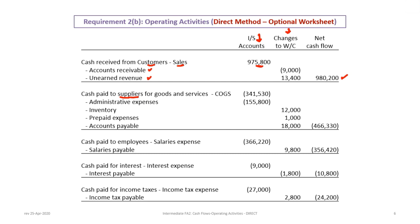For the combined cash paid to suppliers line, cost of goods sold and administrative expenses are pulled from the income statement, then matched with inventory decrease, prepaid expense decrease, and accounts payable increase from the balance sheet, yielding $466,330. Cash paid to employees uses salaries expense and salaries payable; interest and income taxes follow the same pattern. This worksheet is a longer way to accomplish what the previous slides showed, and is especially handy when learning this for the first time.